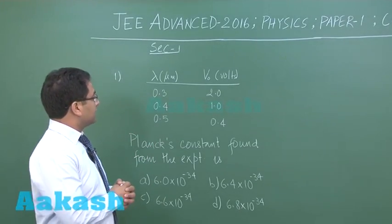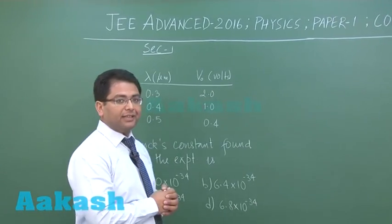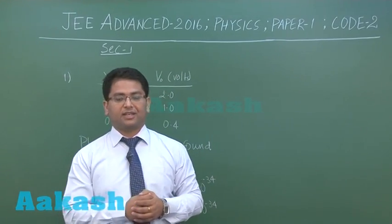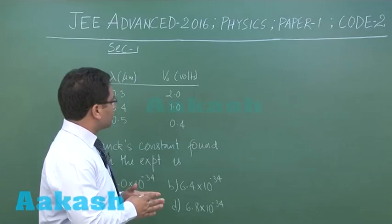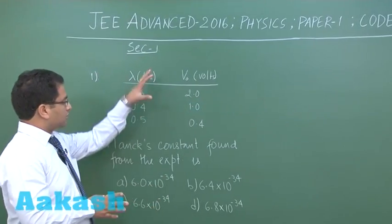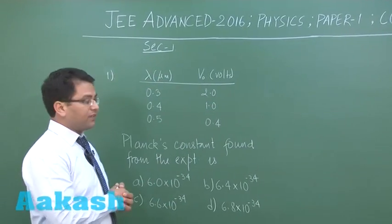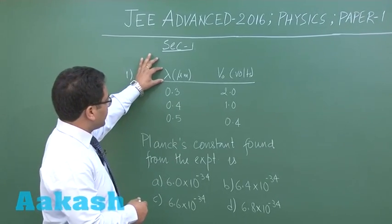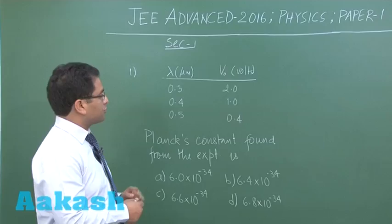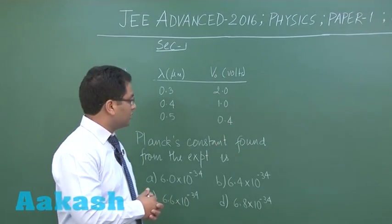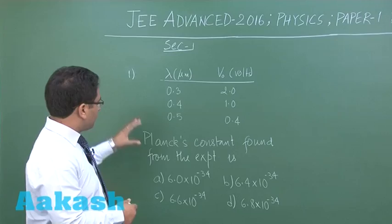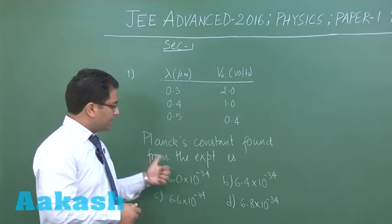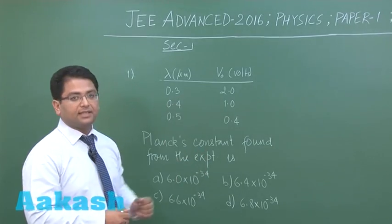Let's begin with the first question. Question 1 is from modern physics and the topic is the photoelectric effect. It is a very straightforward question. The data pertains to the famous photoelectric effect, where the wavelength of light used is given in micrometers and the stopping potential is given in volts. From this data, we are supposed to calculate Planck's constant.